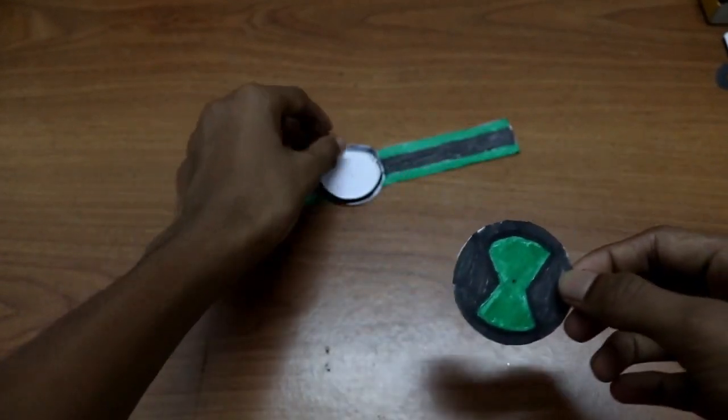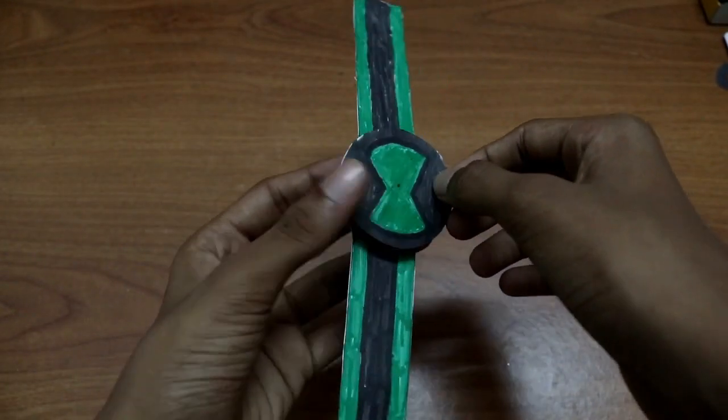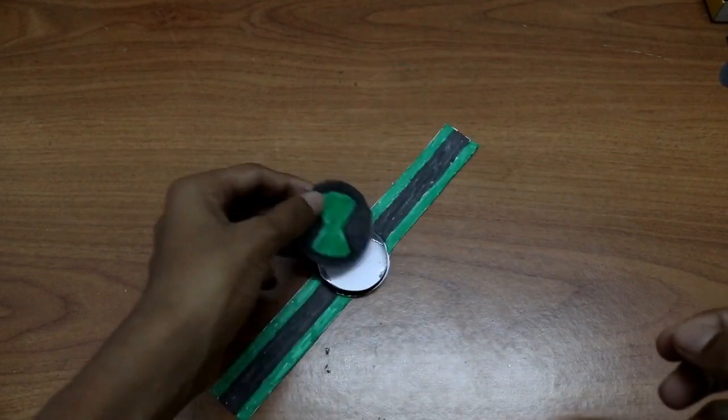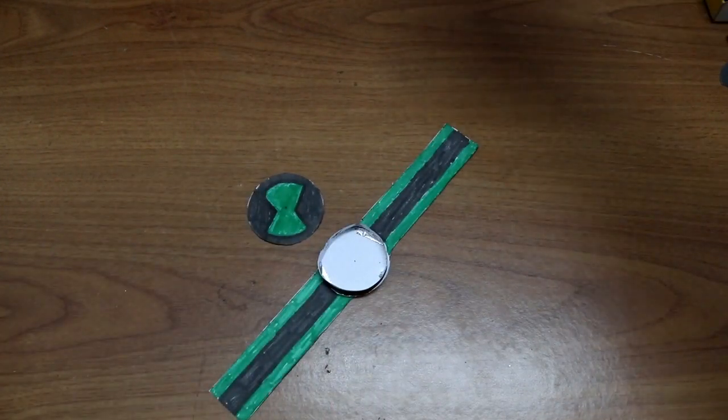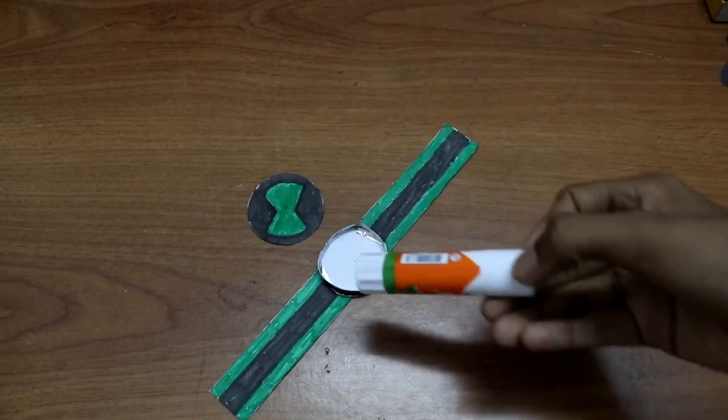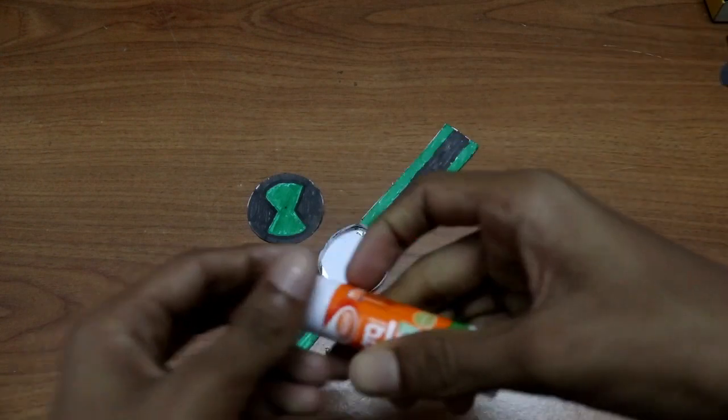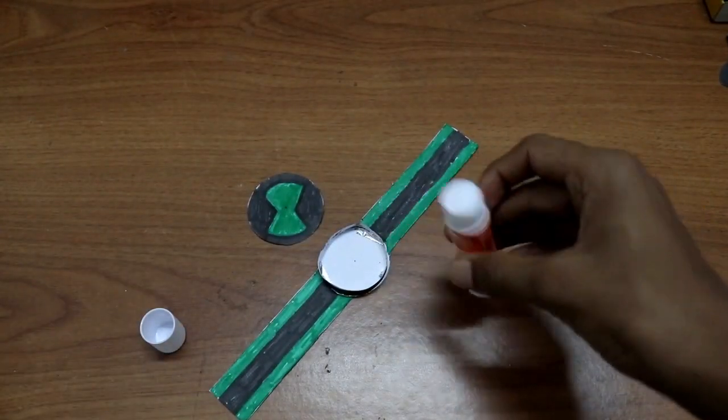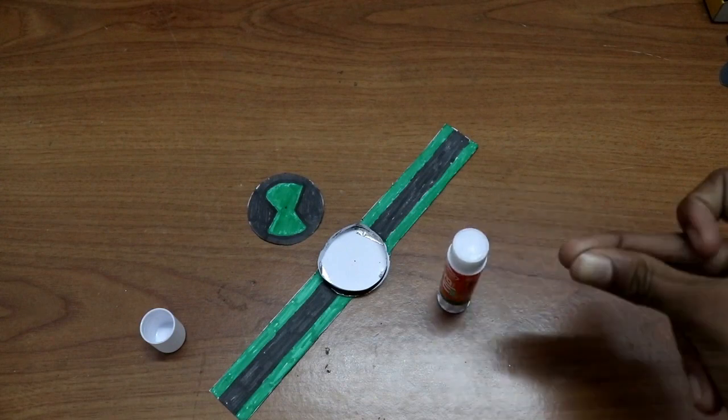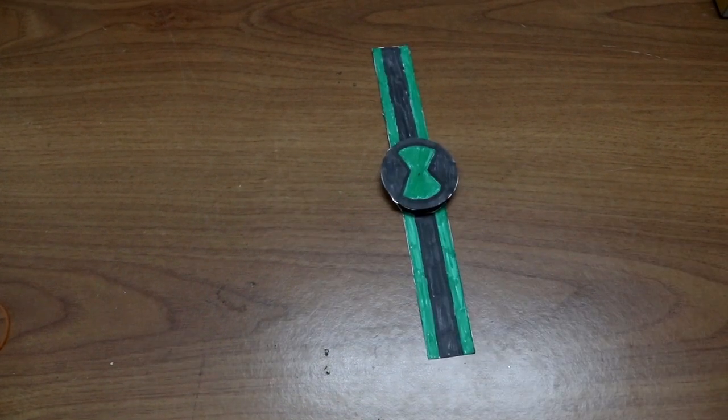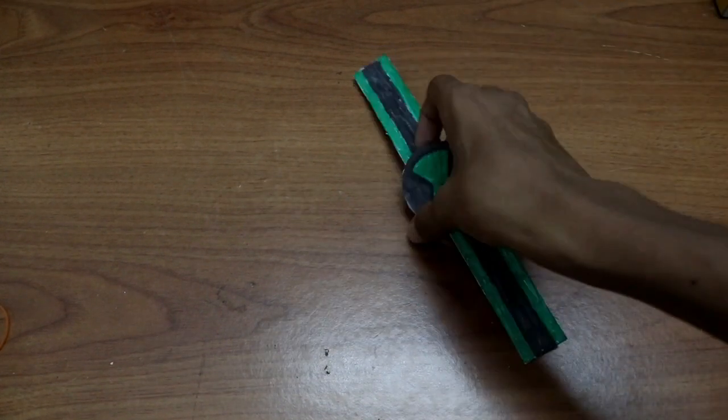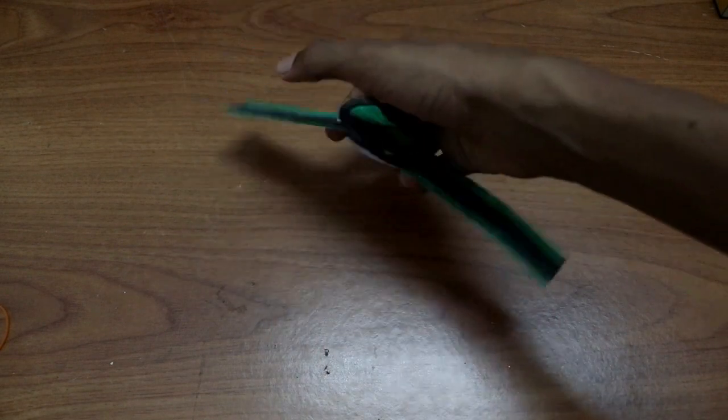Now we'll draw a line and color it. This is how it looks after coloring. You can do it like this to get a good result - this is actually the Alien Force Omnitrix so it should be much better. Now you have to paste it using glue.